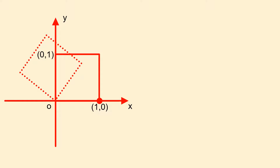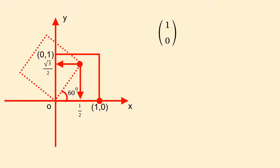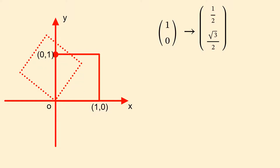The point (1, 0) has its image at the point with x-coordinate of a half and y-coordinate of root 3 over 2. This can be found using simple trigonometry — that's the unit cosine of 60 and the unit sine of 60. So the point (1, 0) is being transformed onto the point (½, √3/2).